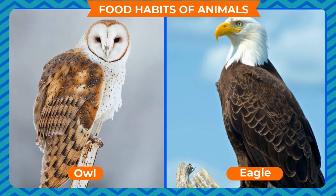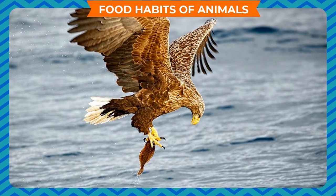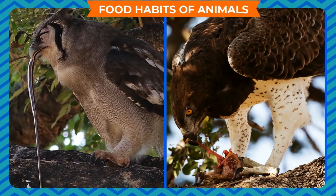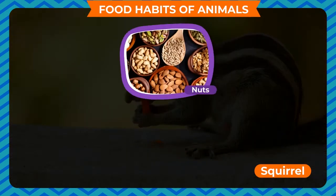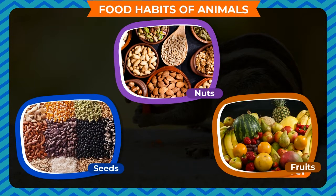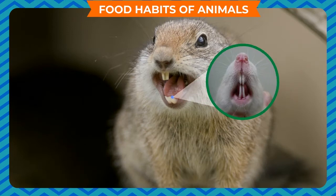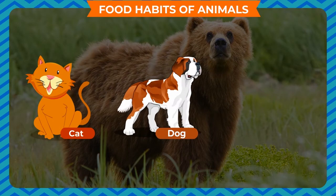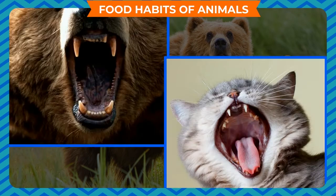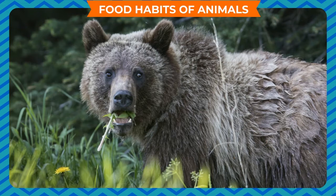Birds of prey such as owl and eagle have strong sharp claws to catch their food. They tear the flesh with their hooked beaks. Rodents such as rat and squirrel feed on nuts, seeds, and fruits; therefore their front teeth are small and sharp. Omnivores such as cat, dog, and bear have small pointed front teeth which help them to eat plants as well as flesh of animals.